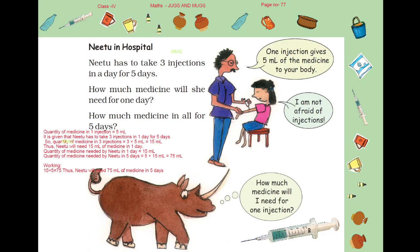Once again, welcome children. Today I am going to explain the Jugs and Mugs chapter from page number 77. So, let's start the chapter.